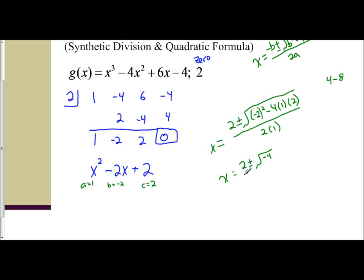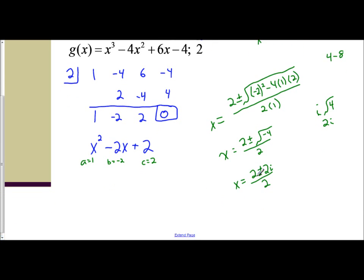So I have the square root of negative 4 all over 2. I still need to simplify because I have a negative inside the square root. I can take the negative out and make it an i, so I have i times the square root of 4, and the square root of 4 is 2 — so the square root of negative 4 is 2i. So x equals 2 plus or minus 2i over 2. Each term on top must be divided by 2: 2 divided by 2 is 1, and 2i divided by 2 is i. So x equals 1 plus or minus i — those are the remaining zeros.